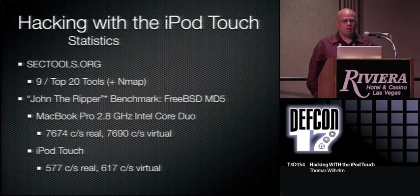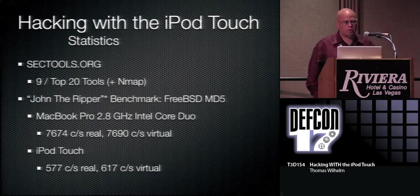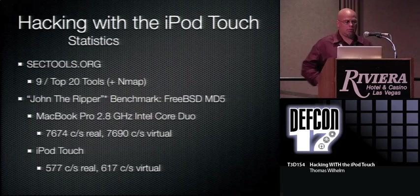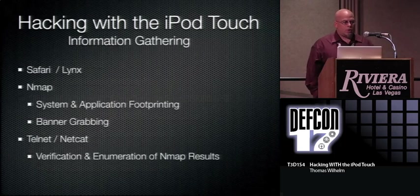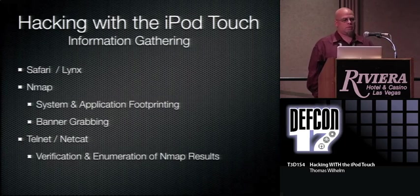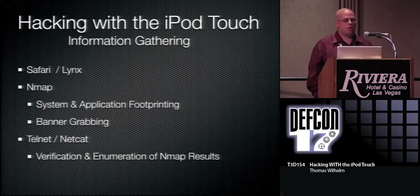I installed John the Ripper — there's an asterisk — and used it as a benchmark to see how the performance was. Using MD5, the MacBook Pro gets 7,600 hits at a time; the iPod Touch is dramatically less. So as a powerhouse, it's not. But for things like Netcat, you don't really need the power — you just need the connectivity. In the information gathering phase, there's Safari built in, Nmap — one of the first tools built — and Telnet and Netcat for footprinting, banner grabbing, and enumerating findings.